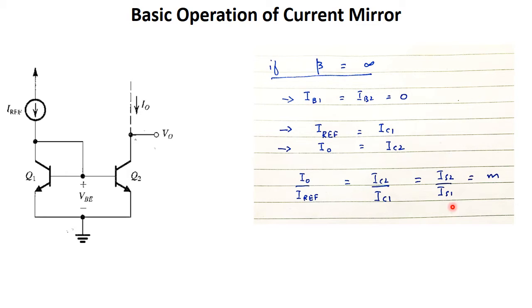IS2 and IS1 are the reverse saturation currents which tell about the dimensions of the transistors. So if both transistors have the same dimension, then IS2 and IS1 are equal and M is equal to 1.